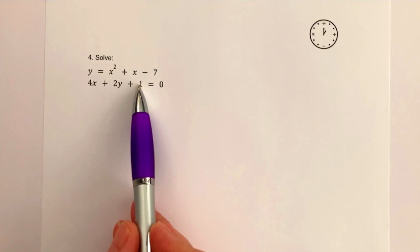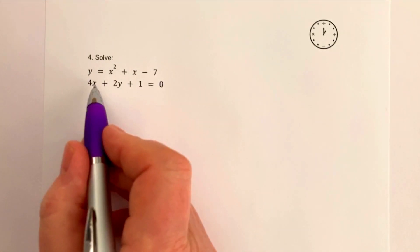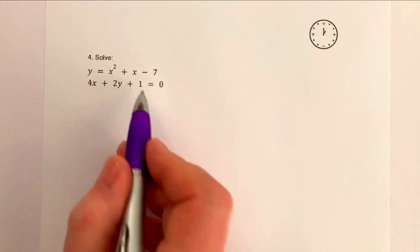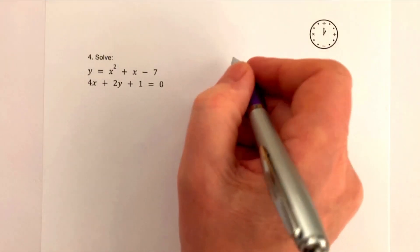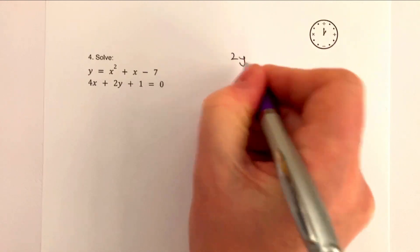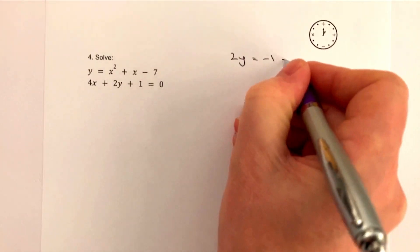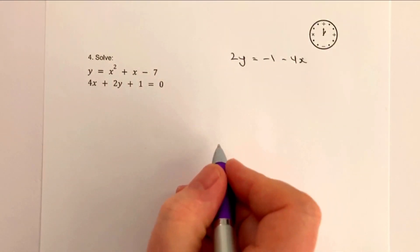This one's slightly different because really we're in a position where we're going to have to deal with fractions. So what I would do is I would substitute for y, and I'm going to basically say that y equals if I kind of change this around the other way, I'm going to get 2y equals minus 1 minus 4x.